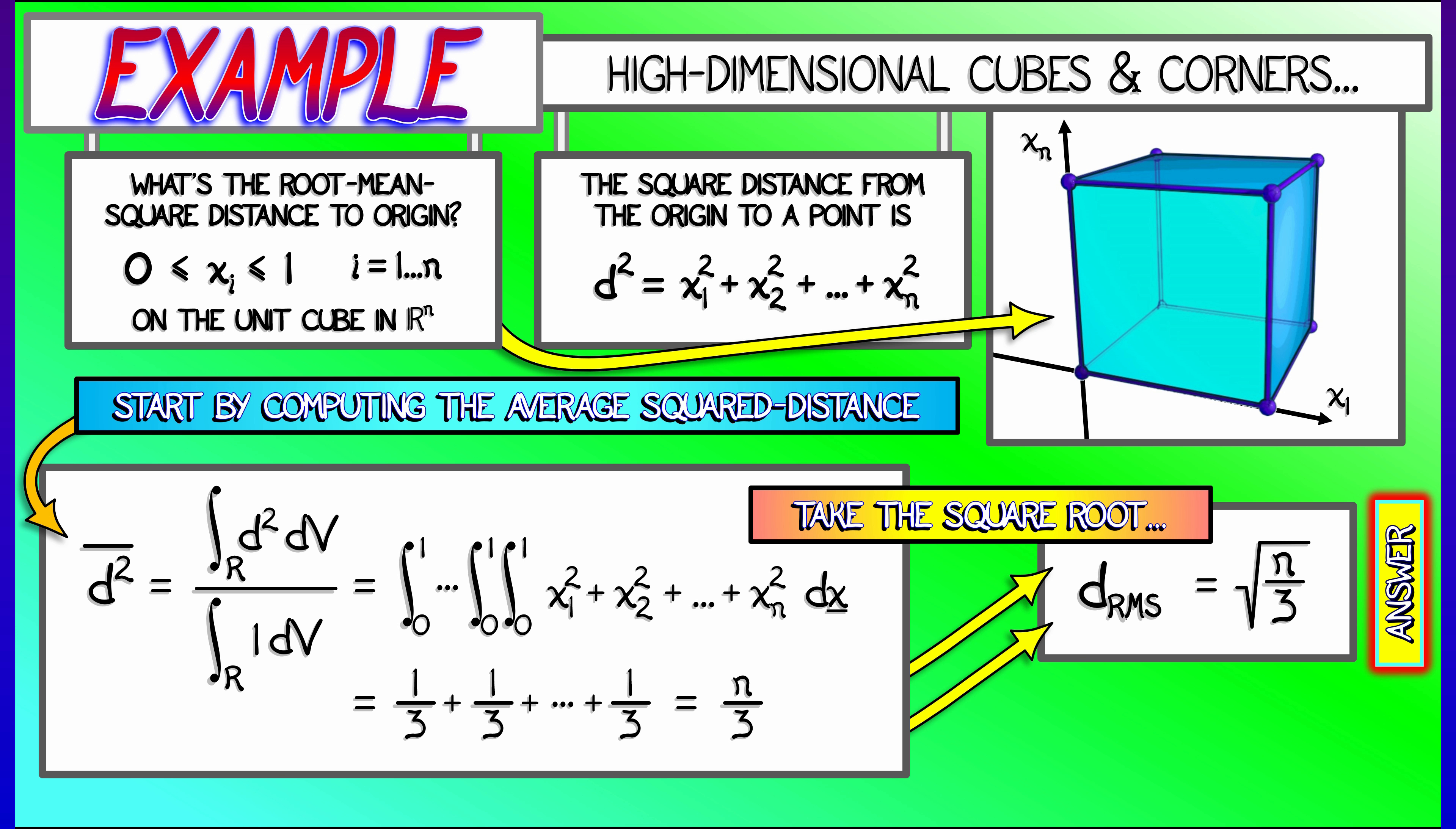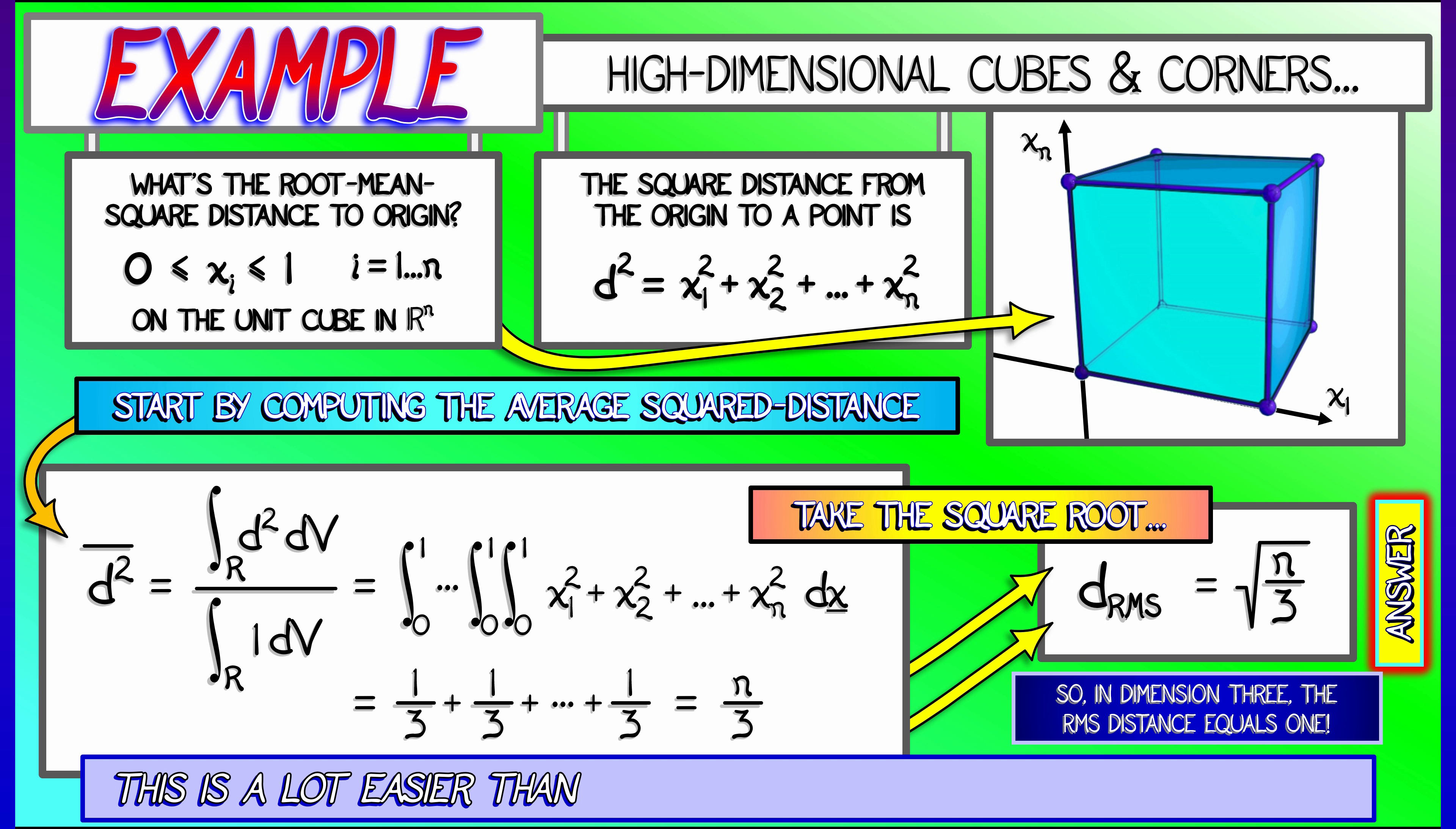But here's the thing. It's not so bad to compute this. This was a relatively simple integral. It's not so simple if you want to compute the average of the distance as opposed to the root mean square. Put that square root in there.